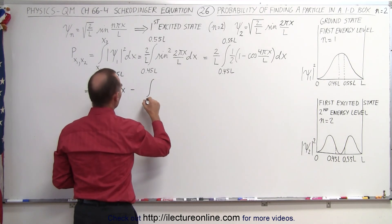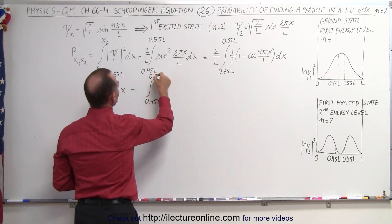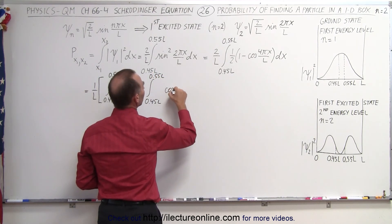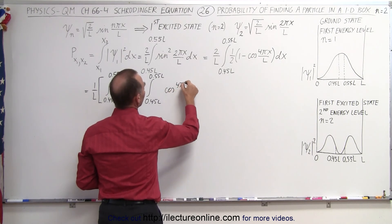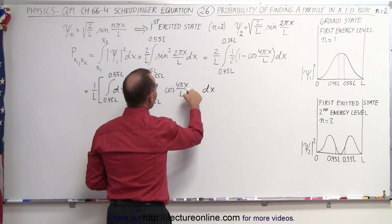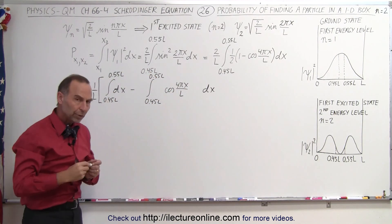The integral from 0.45L to 0.55L of simply dx and then we have minus, let's leave a little space here. We have 0.45L to 0.55L and now we need the cosine of 4πx over L times dx and notice again I left a little space here. What do we do with that space?